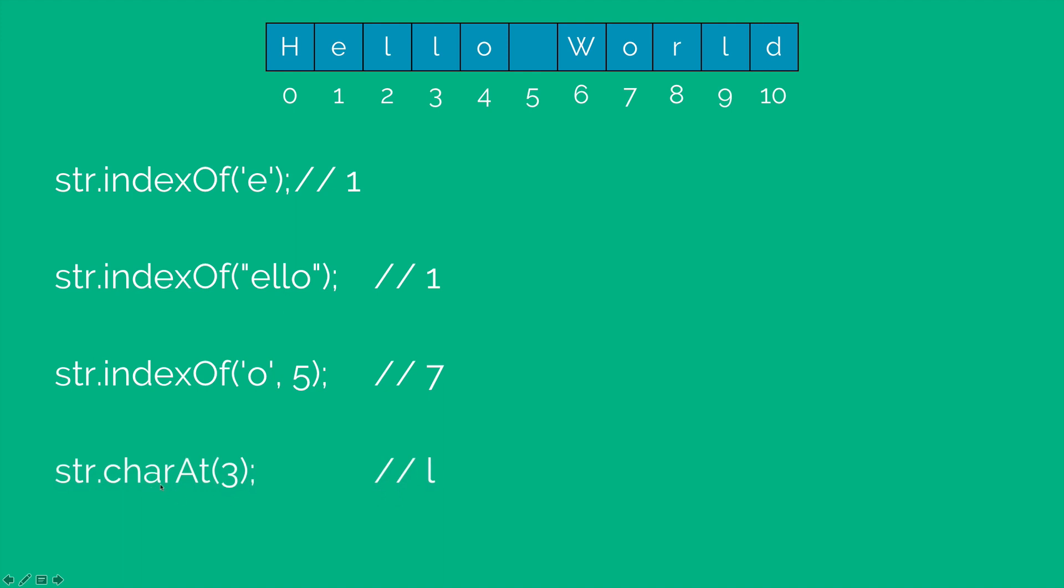I can use the charAt method where I pass the index and find out which character is present at that index. For example, at the index 3 I have the character l which is present over here.